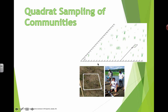We can do the same thing in an ecological community. If you take a look right here, this is kind of a view of a field area, and what we've done is marked off a grid. This doesn't have to be a real grid — it can be a virtual grid. What you can do is generate random numbers using your calculator or some kind of random number generator to generate an X and Y coordinate.